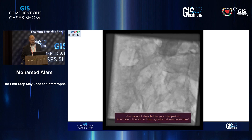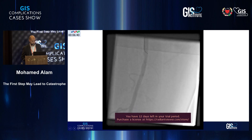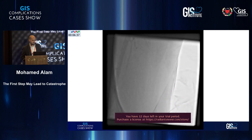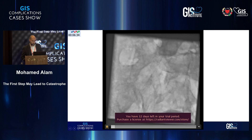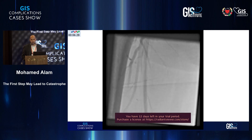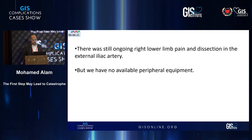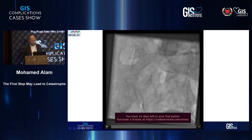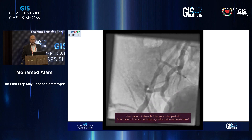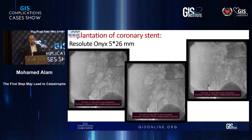This is the result. The patient still had ongoing right lower limb pain, and we identified a dissection flap at this point. How could we manage it with no peripheral intervention kits? So we implanted a coronary stent — Resolute Onyx 5x26.